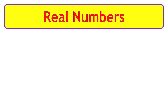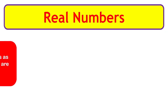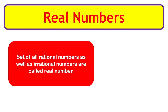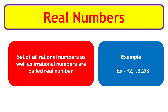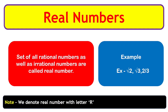Real numbers: the set of all rational numbers as well as irrational numbers are called real numbers. Examples: √2, √3, and 2/3. We denote real numbers with the letter R.